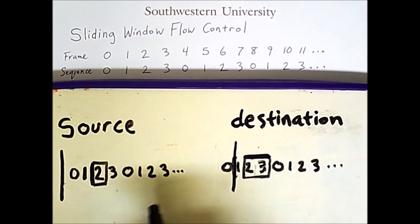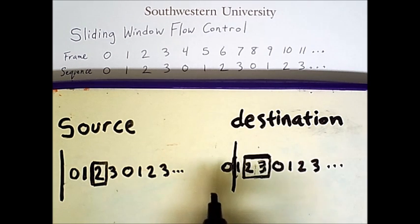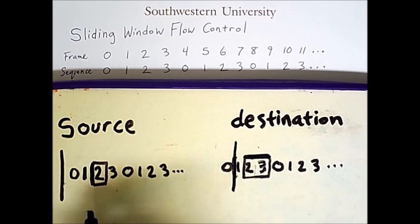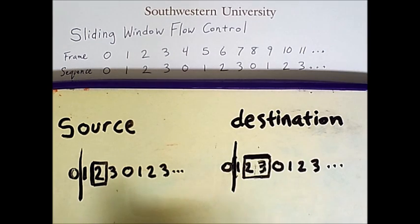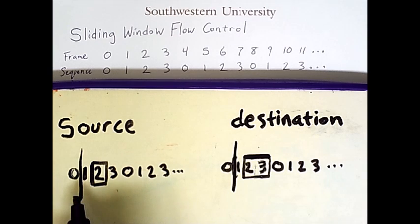the ready-to-receive message from the destination makes its way to the source, which causes this vertical bar to move as well. Notice that the source's vertical bar only moves past the 0.